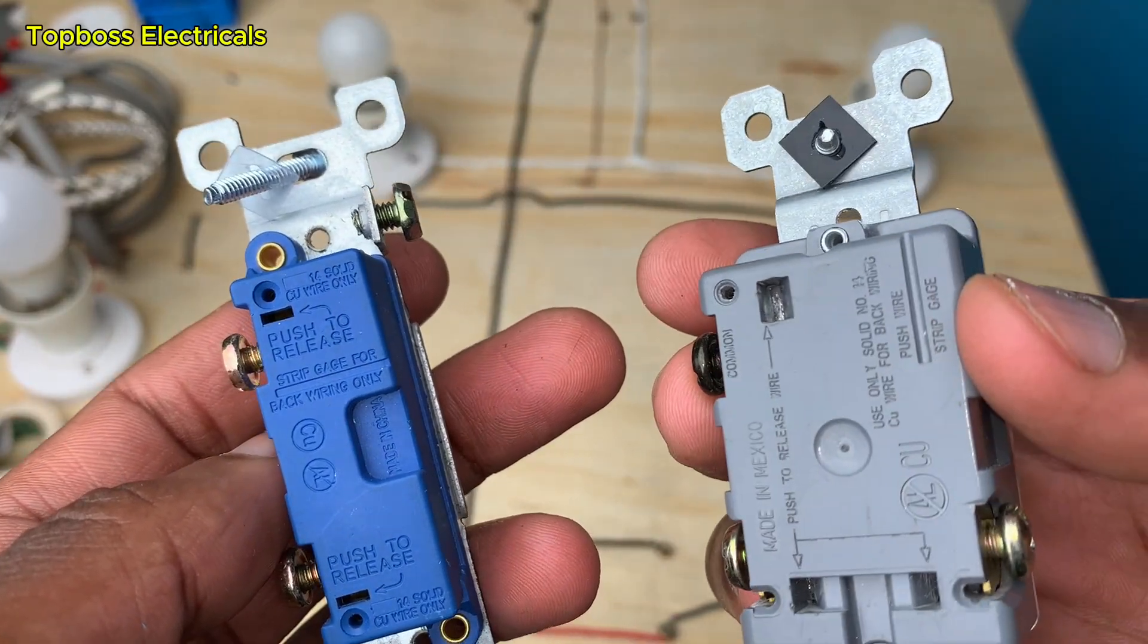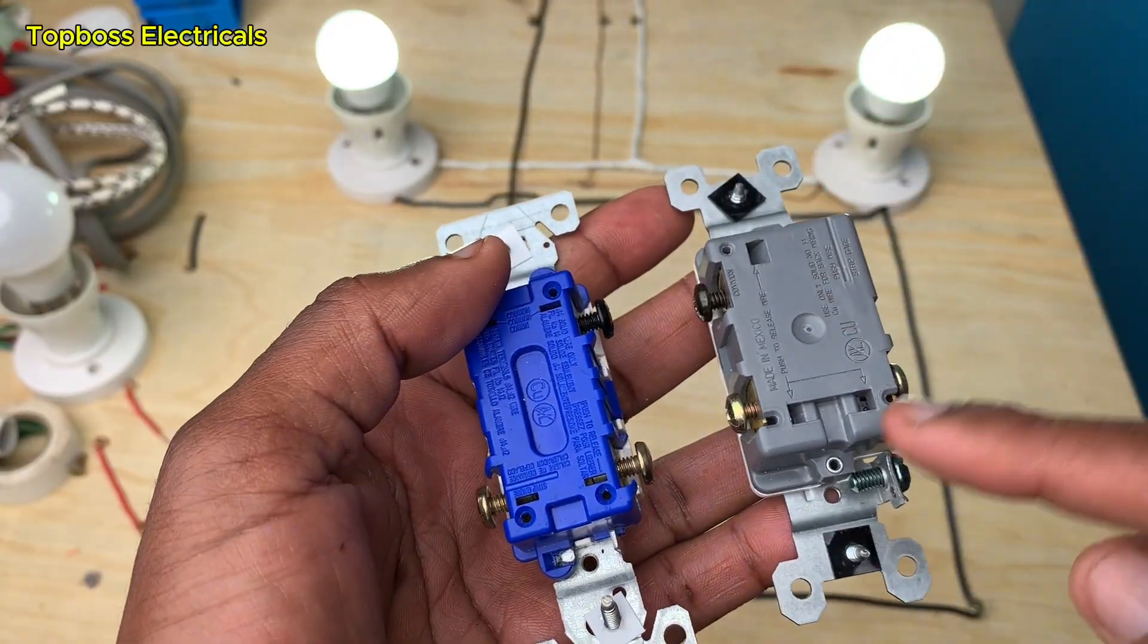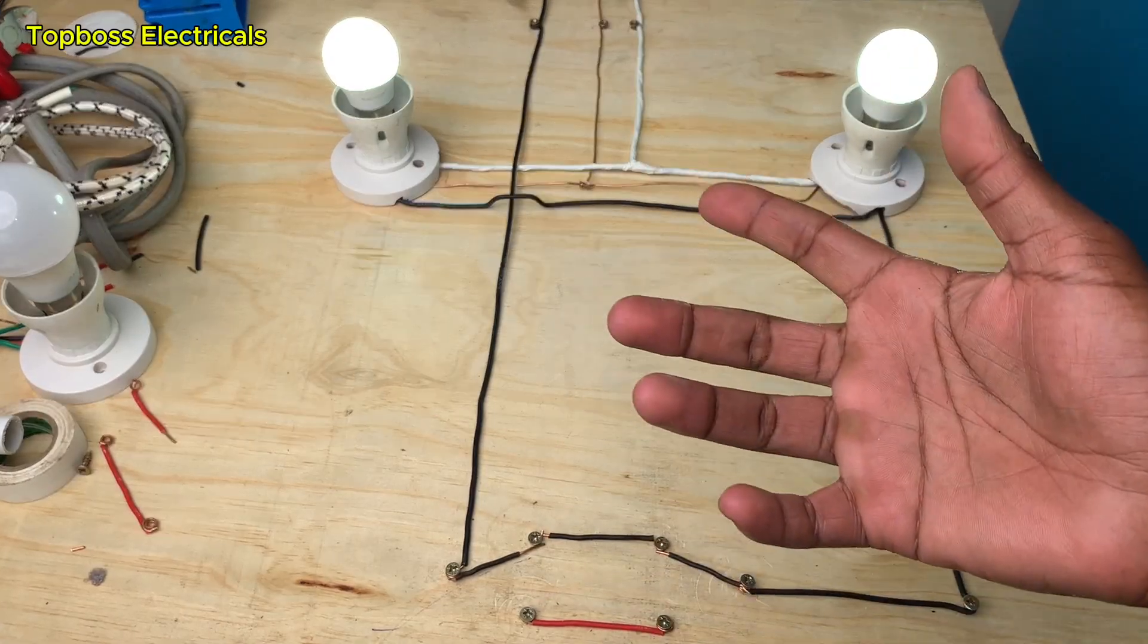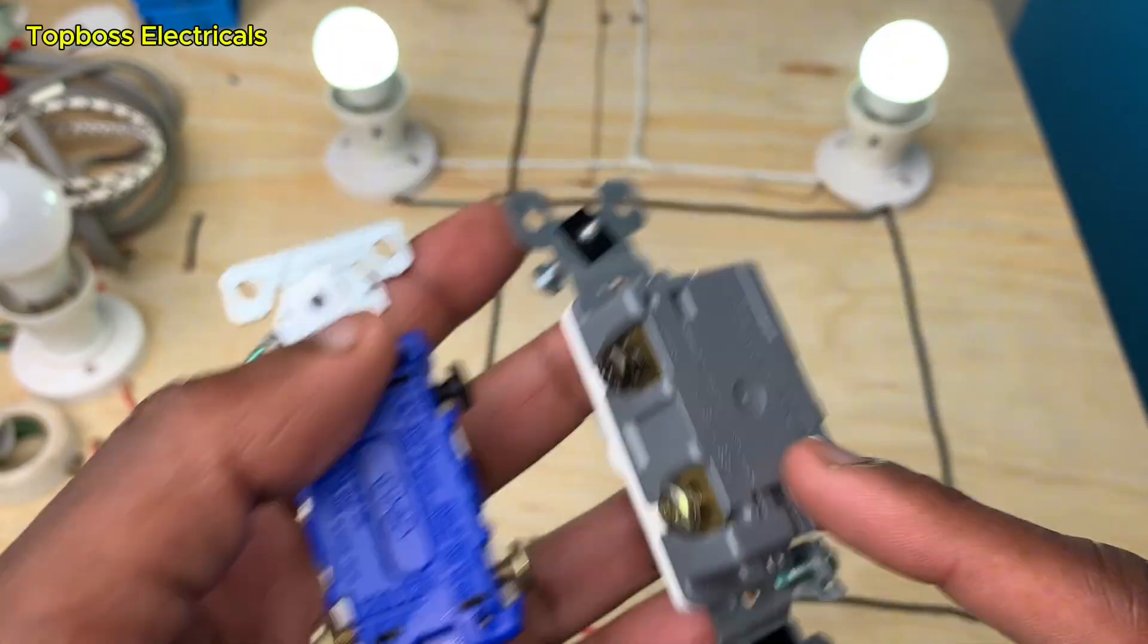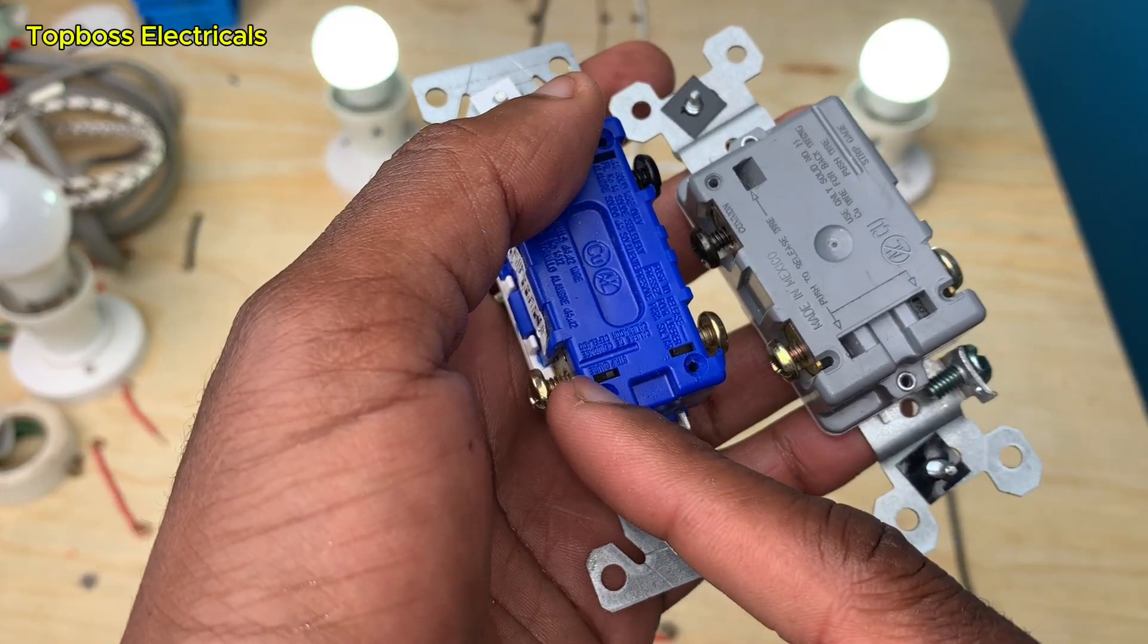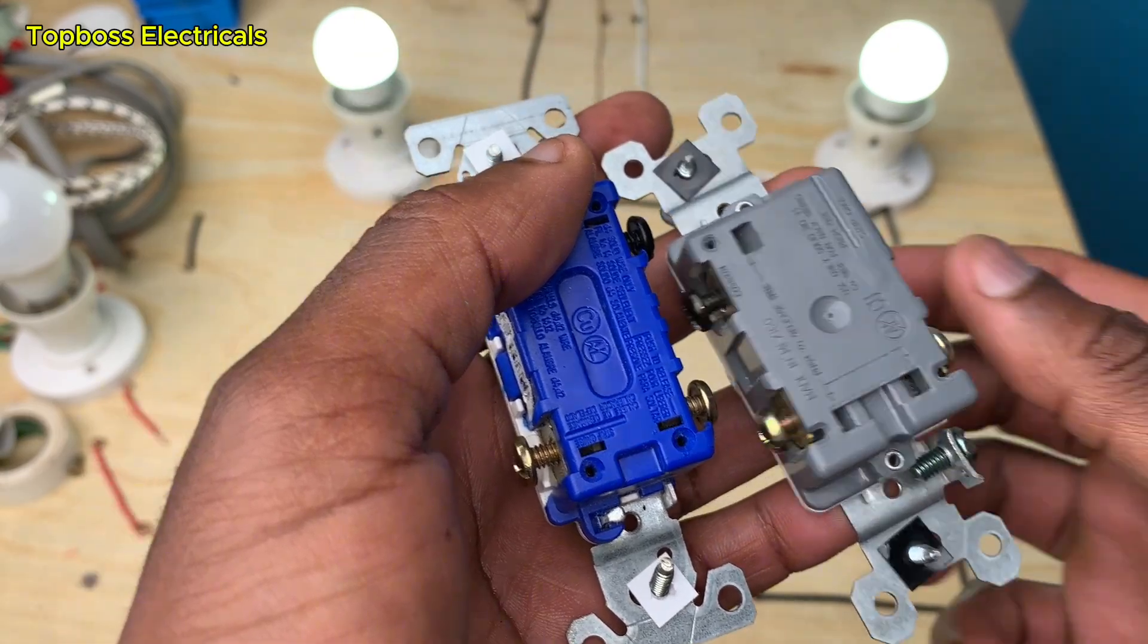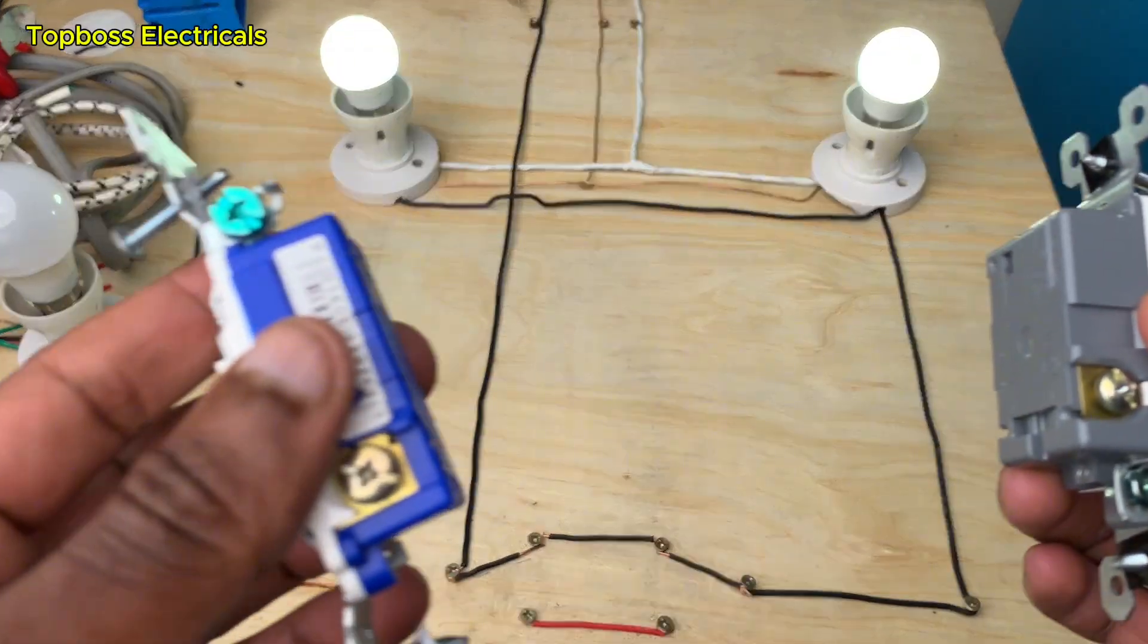To make it simple for you to understand, these two screws will be connected with the red wire and the black wire. These are normally referred to as the travelers. We'll have the red connected at this point to this point, and then the black connected to this screw to the other screw here, so that we have the red and black interconnecting.